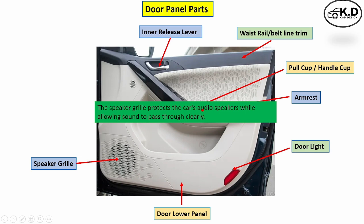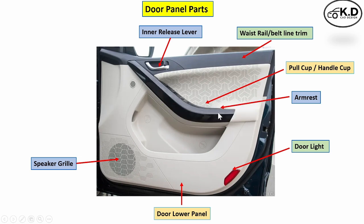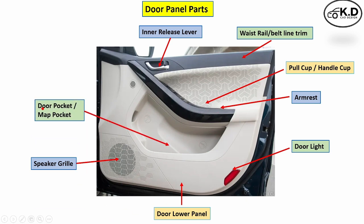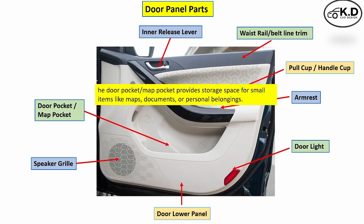The next part is the speaker grid, which allows the audio system to deliver sound clearly to the passenger. The next part is the door map pocket, which provides storage for manuals, papers, and a bottle holder.